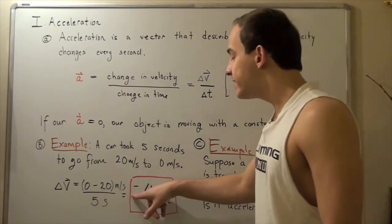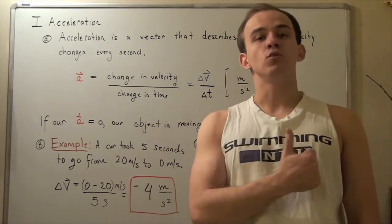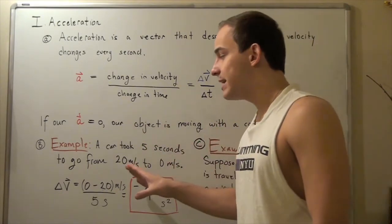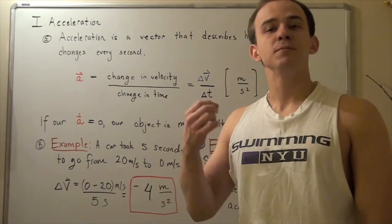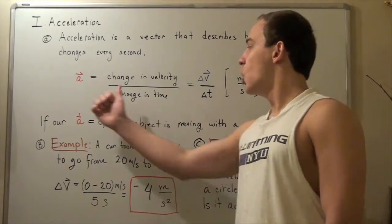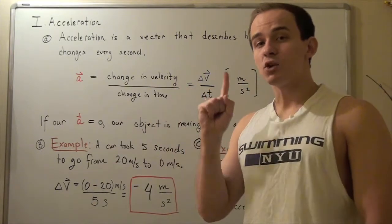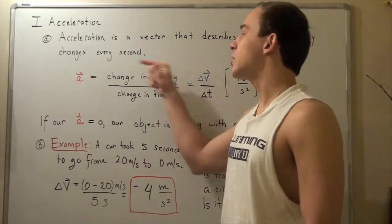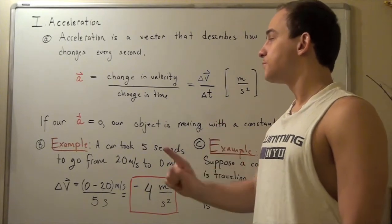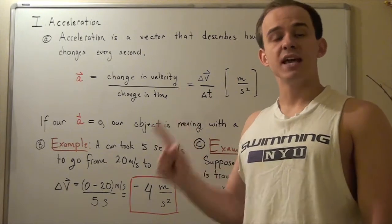What the negative means is deceleration—it's accelerating in the reverse direction. This shows that velocity and acceleration don't have to be in the same direction. In other words, velocity is going this way because our car is still traveling, but acceleration is going in the reverse direction because we're pressing on the brakes.